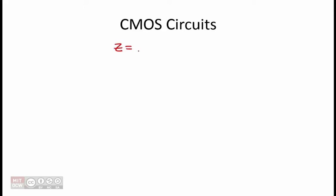In this problem, we are given a function Z equal to A or B and C, the whole thing negated. We are then asked to produce a CMOS circuit that implements the function Z.